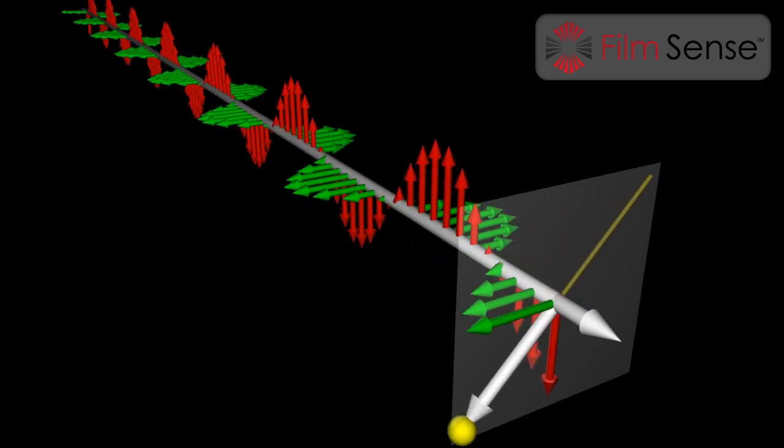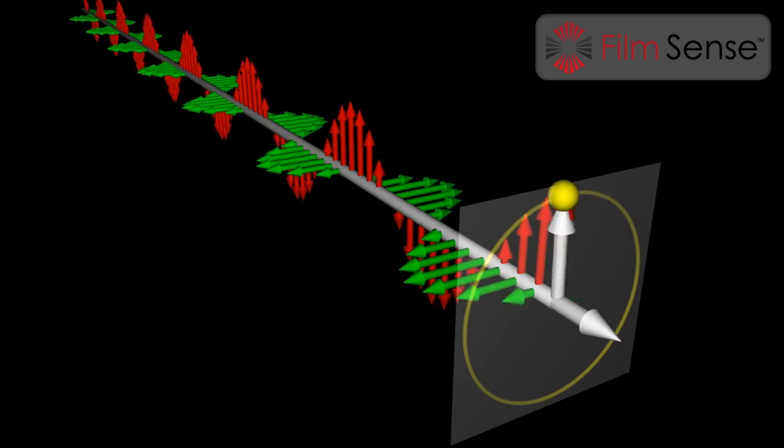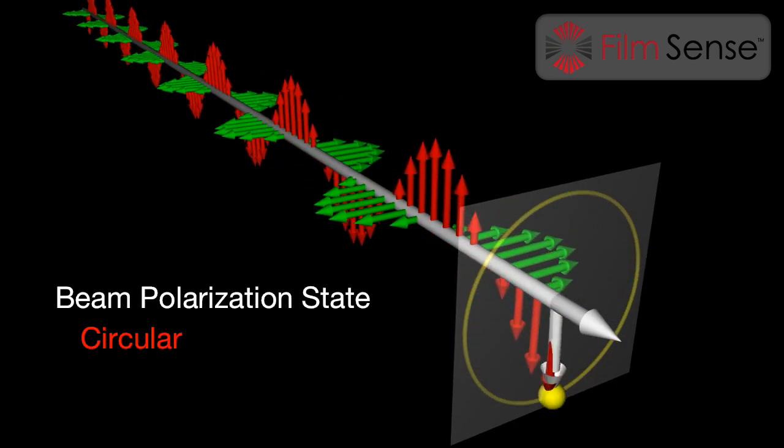Waves can be added together to create new polarization states. Here, the red and green waves are added in phase, resulting in a linear polarized beam with a different orientation. When two waves with equal amplitudes are added 90 degrees out of phase, that is, the maximum amplitude of the first wave occurs when the amplitude of the second is zero, circularly polarized light is generated.